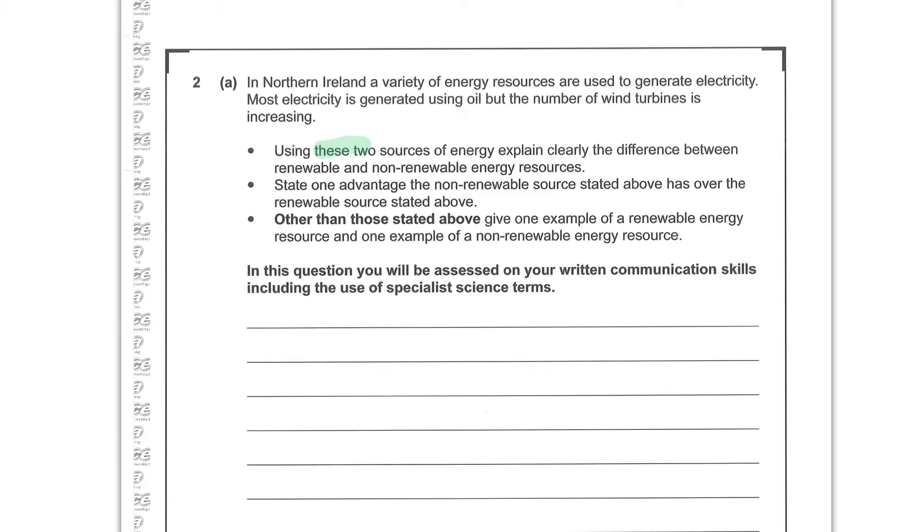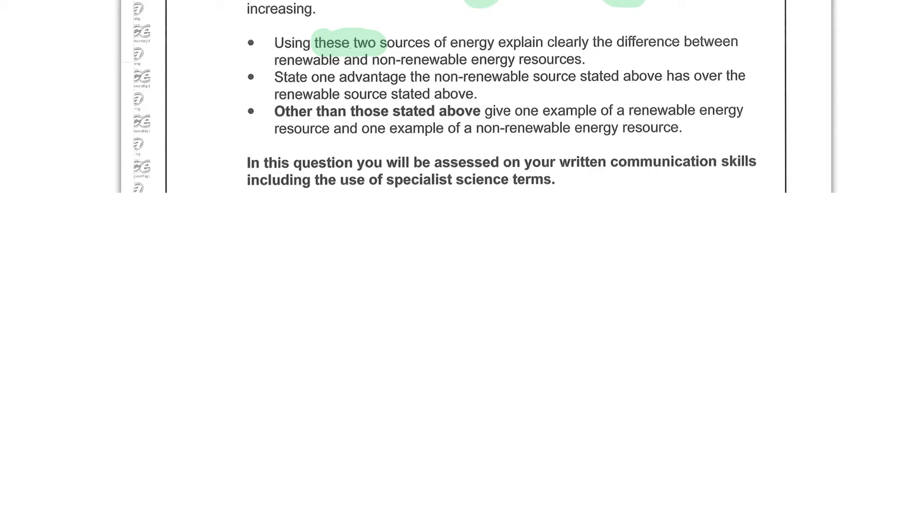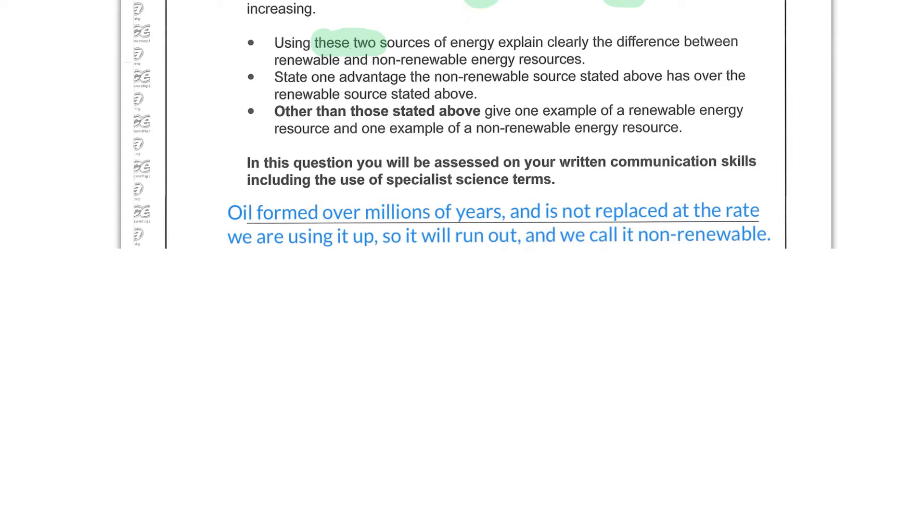So these two sources means we must be talking about oil and wind. In this question we want to make sure that we specifically mention why oil is non-renewable and why wind is renewable. So we need to understand a little bit about what's going on with them and clarify that in our answer. Oil formed over millions of years and it's not being replaced at the rate we're using it up. So it will run out and that's why we call it non-renewable.